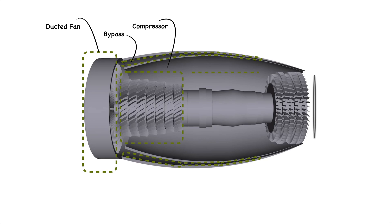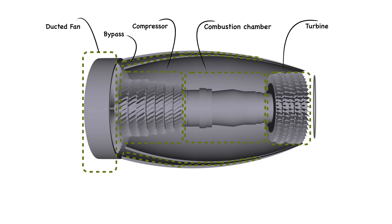The compressor is one of the most important parts of all gas turbine engines. Right after the compressor there is a combustion chamber where the gases are burned in the presence of oxygen. Then there is the turbine, which is again the most important part of all gas turbines.